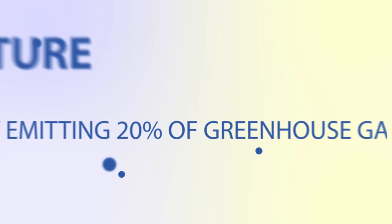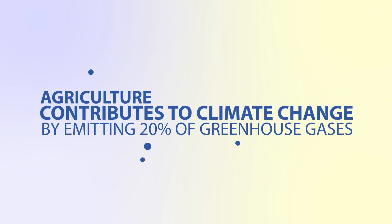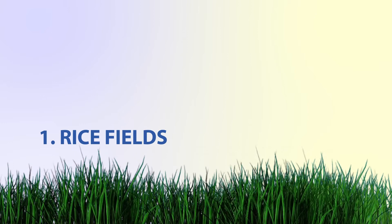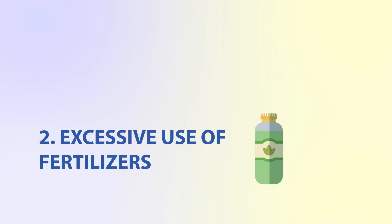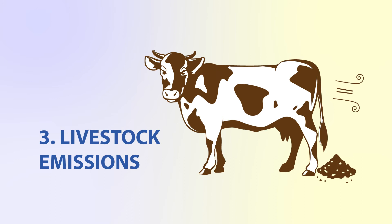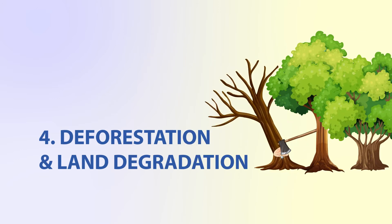Agriculture also contributes to climate change by emitting 20% of the greenhouse gases. This is through rice fields, excess use of fertilizers, livestock emissions, deforestation, and land degradation.